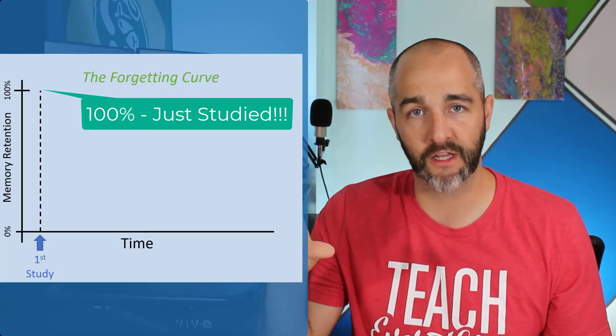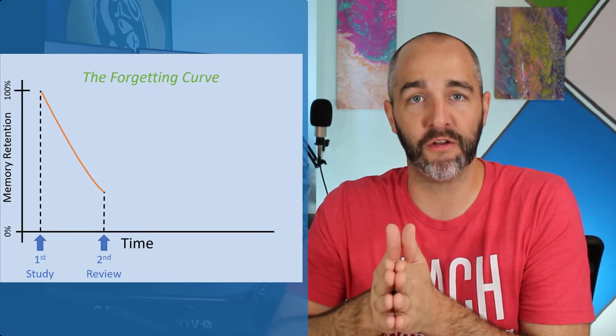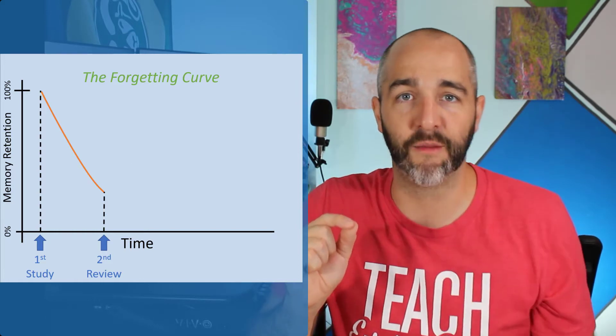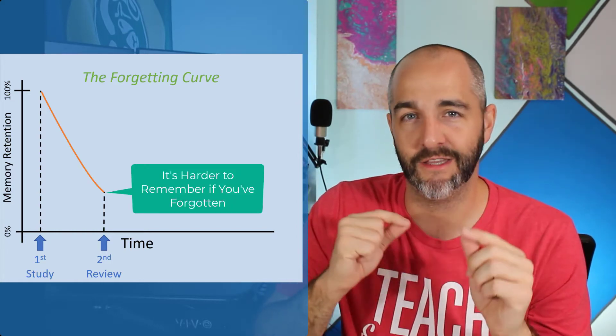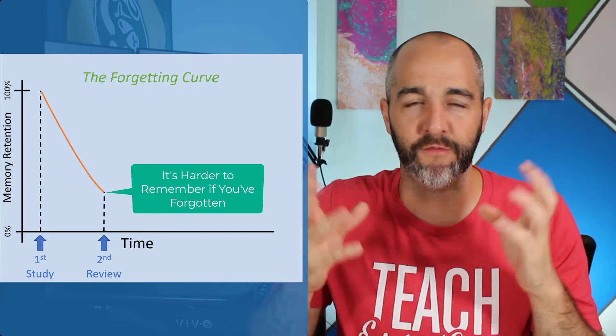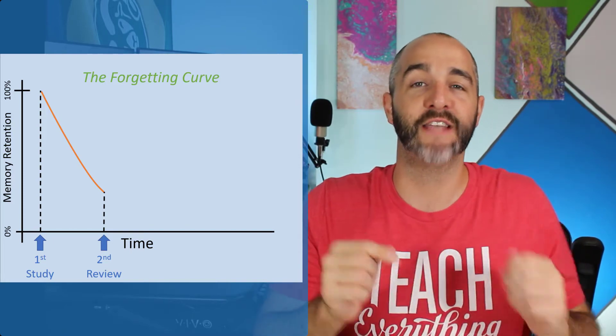The forgetting curve plays a really important part in this idea of spaced repetition. What the research shows is that the reason spaced retrieval works is that you first study a concept and then you immediately begin to forget it. If you wait a certain period of time and allow yourself to forget that material, and then you restudy it or retake a practice exam, because you've forgotten it, it takes a little bit of extra mental energy to recall that memory from your long-term memory bank. That little extra effort of recalling a nearly forgotten memory is actually what strengthens it. That's the difference between cramming into one session or spacing it out over time.